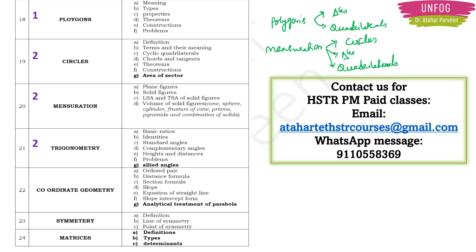Coming back to Trigonometry — 2 questions, covering common general expected questions. For Coordinate Geometry, 3 questions were asked. This is a very important chapter because it has key formulae: distance formula, section formula, slope formula, and equation of a straight line — these make this chapter very important. For Symmetry, no question was asked — it is very easy and you can skip it. For Matrices, 2 questions were asked.